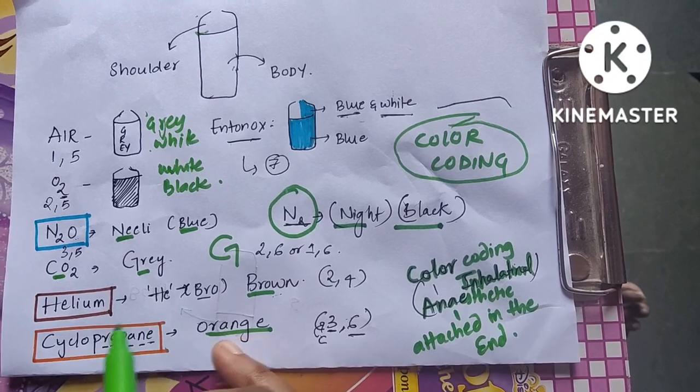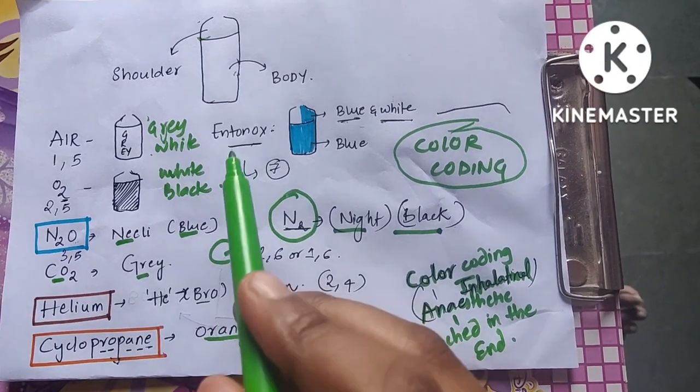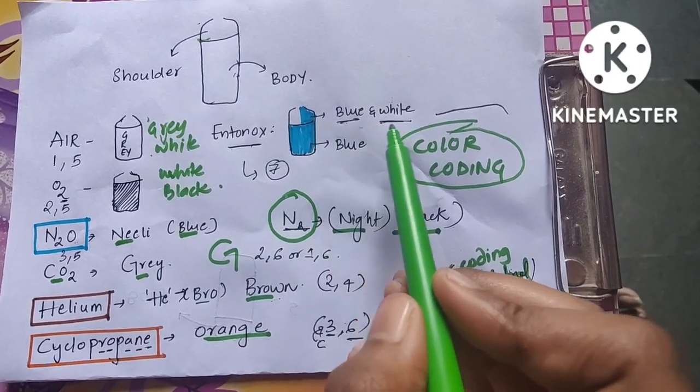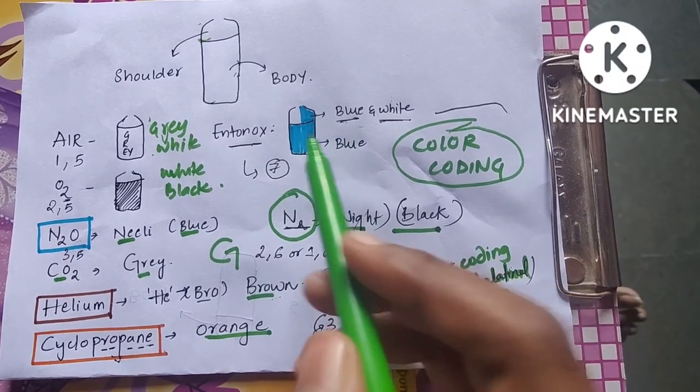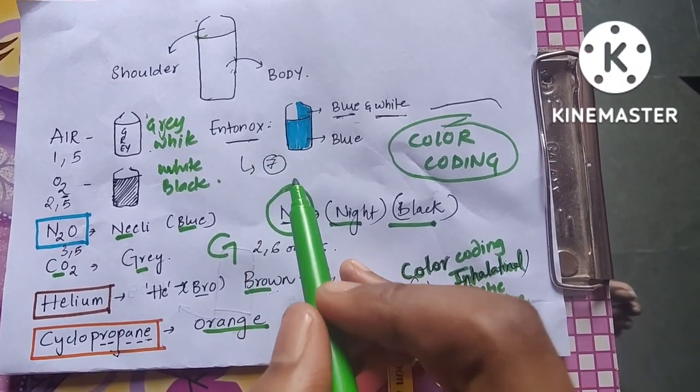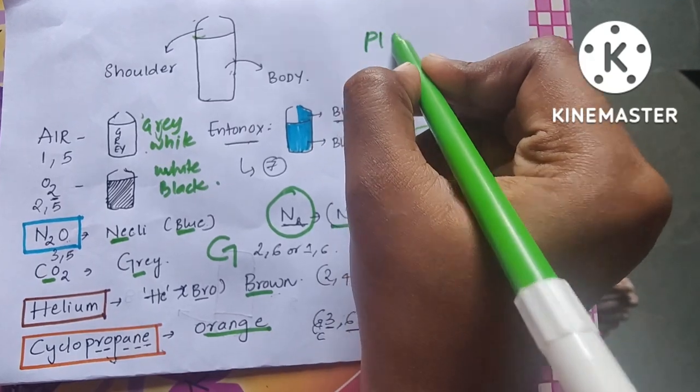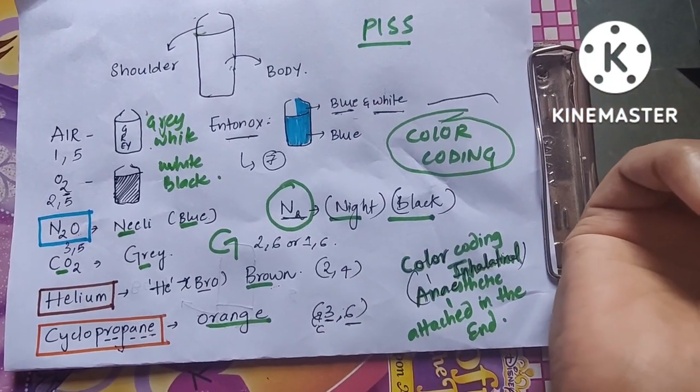Entonox has blue colored body and blue and white shoulder. Entonox is half and half. Entonox always has exceptions. The pin index safety system is something you need to know. Entonox is the only cylinder where you have only one pin index, that is seven.